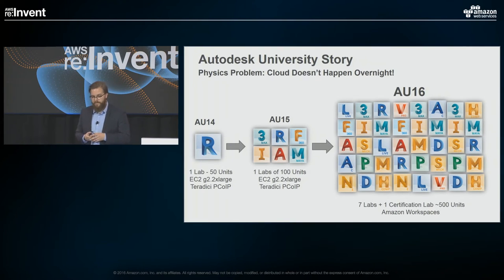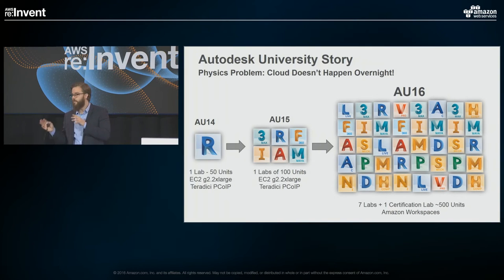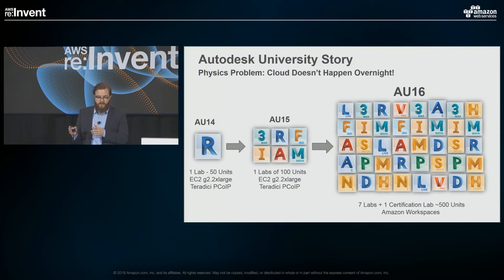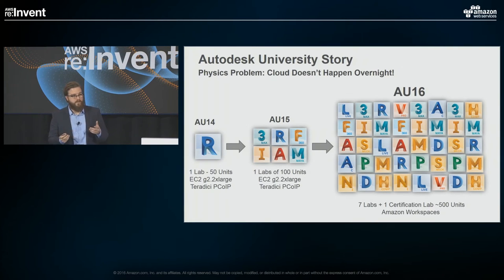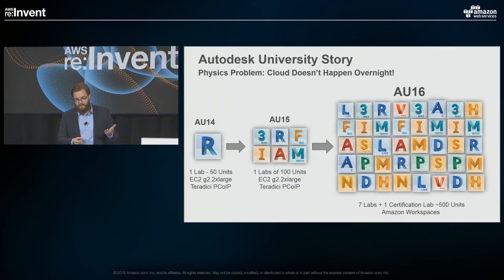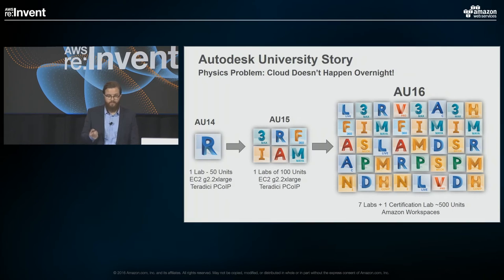We decided to expand for AU 2015 — from 50 units to 100. We isolated one lab: 50 physical workstations running the Teradici PC over IP client, and 50 that were actual zero clients. We ran all our labs from that room on AWS with over 35 different Autodesk software titles. Once again it delivered — it was a seamless experience. People thought they were on physical devices, which is exactly what we wanted. At the AU 2015 wrap-up, sitting in our war room with Steve Muller from AWS, he said: 'Joel, what do you think — let's do this full scale next year.'